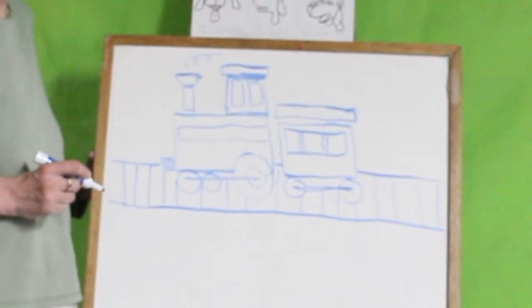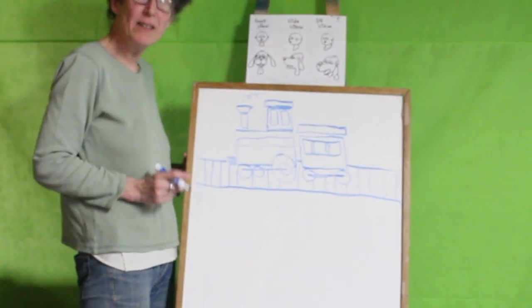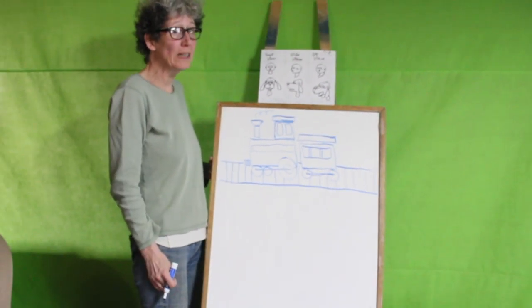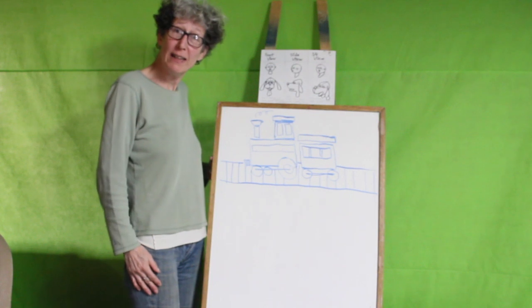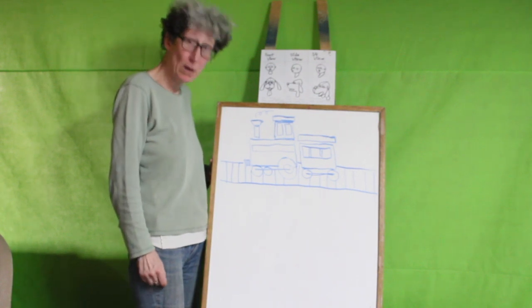Now that you've drawn your whole train, you can paint it. Remember to paint it all different colors. Oh oops, I forgot to tell you, you've got to outline it with a marker first.